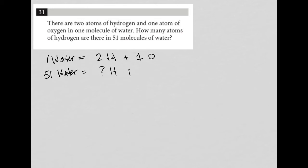Well, we would know that there would be 51 oxygen. How do we know that? Well, because this number matches this number here, right? For every one water molecule, there's one oxygen atom. And therefore, for 51 water molecules, there are 51 oxygen atoms.